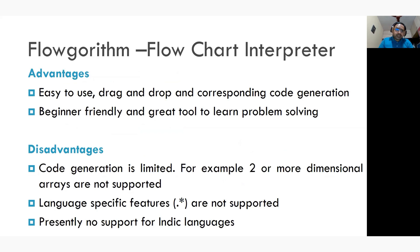FlowRhythm has its own advantages as well as disadvantages. It is very easy to use — drag-and-drop with corresponding code generation, beginner-friendly, and a great tool for learning problem solving. The disadvantage is that code generation is limited: multi-dimensional arrays are not supported, language-specific features are often unsupported, and currently there is no support for Indic languages — the same applies to other languages such as Spanish, French, Portuguese, and others.